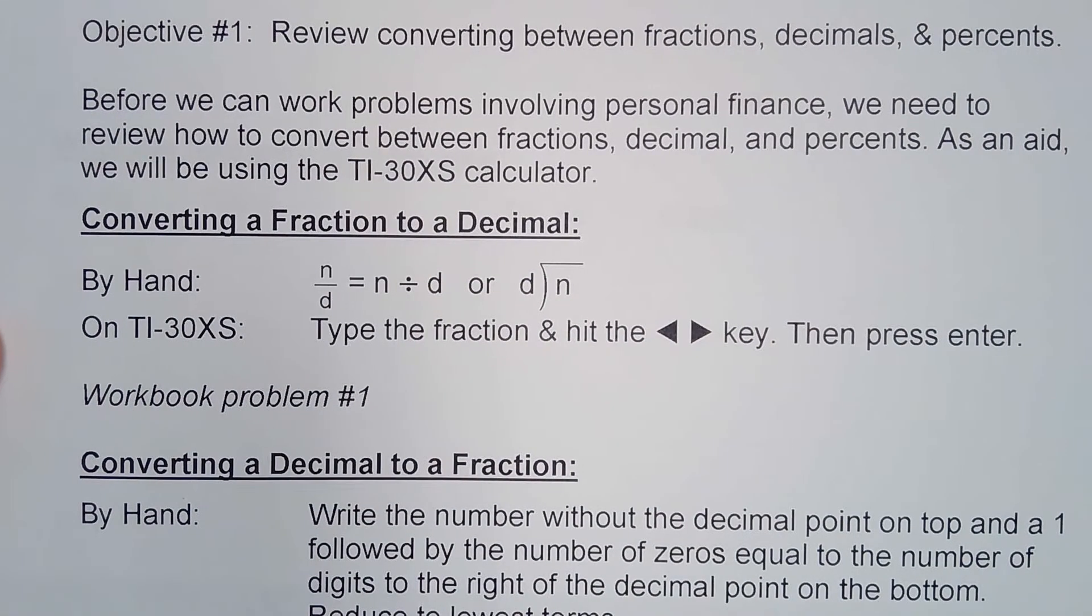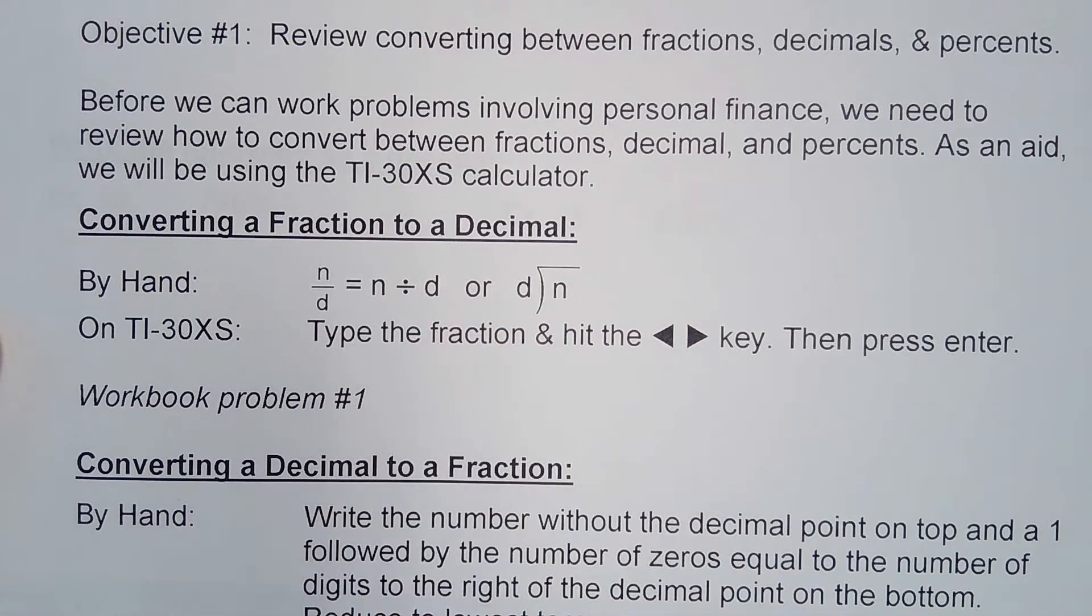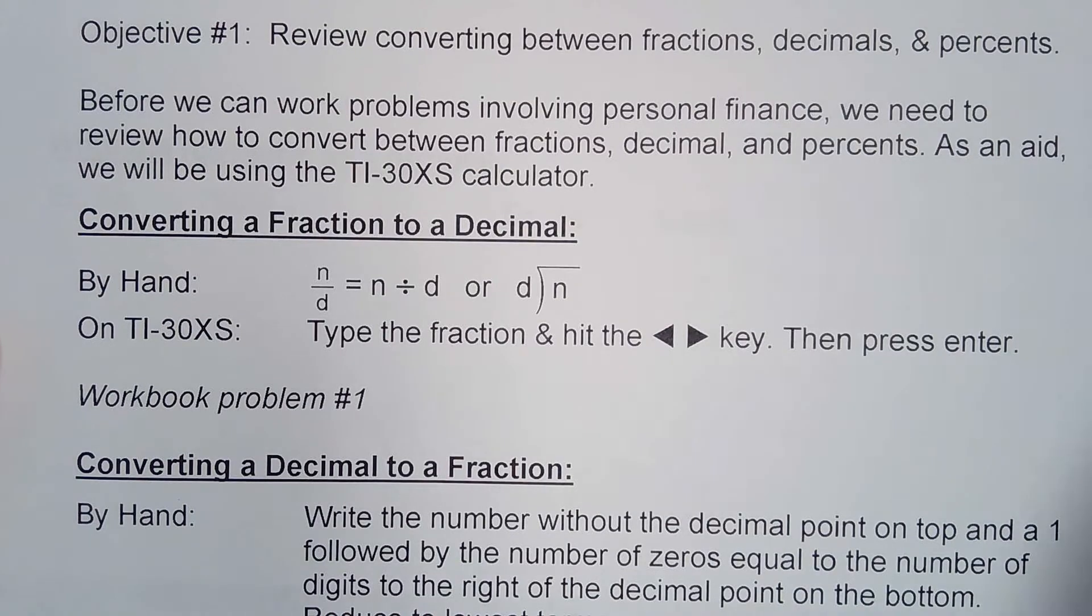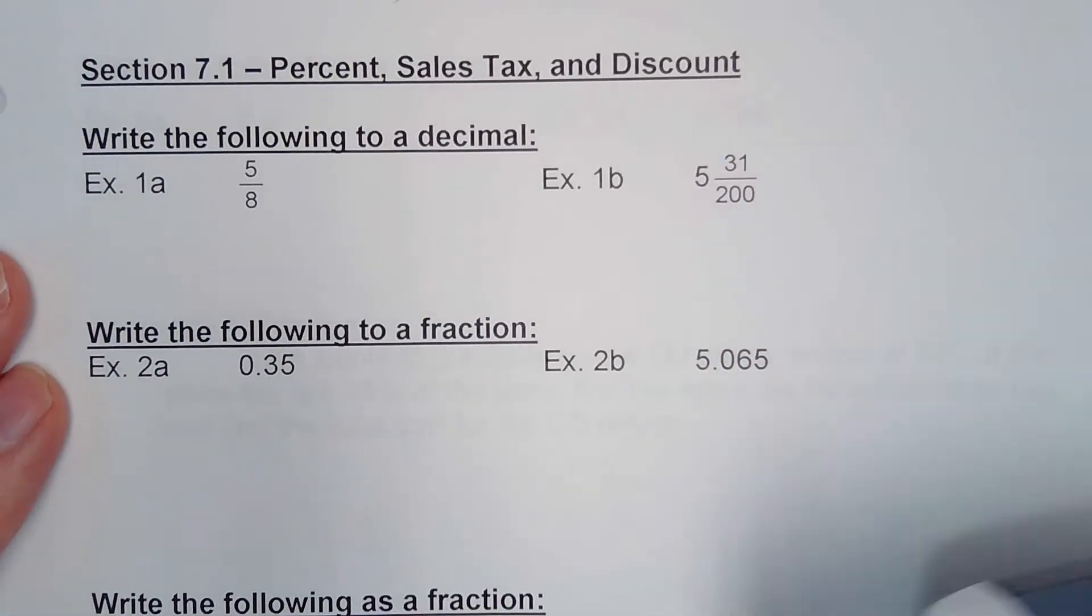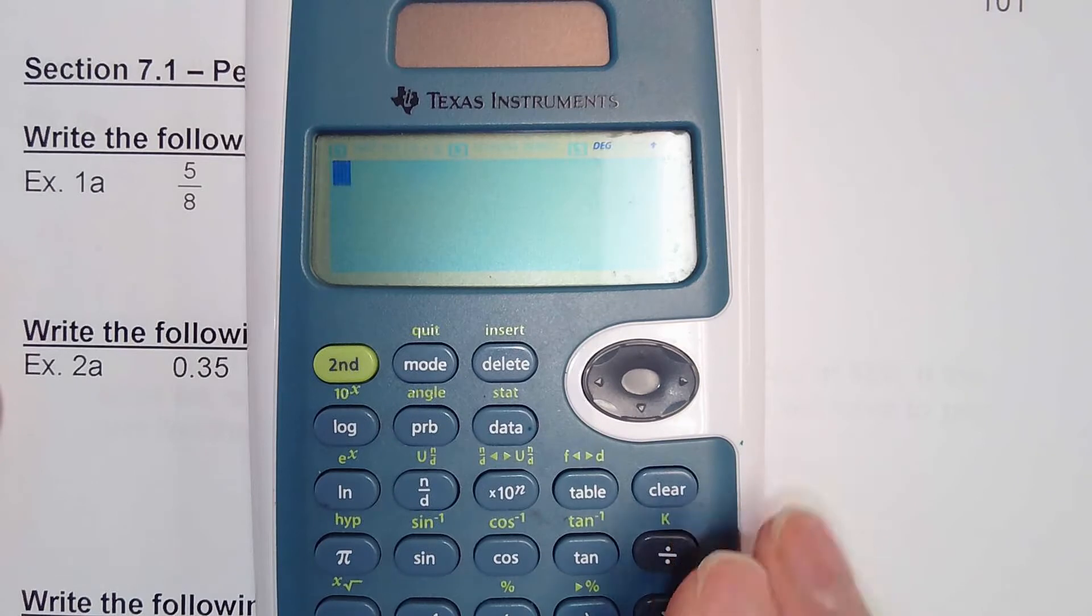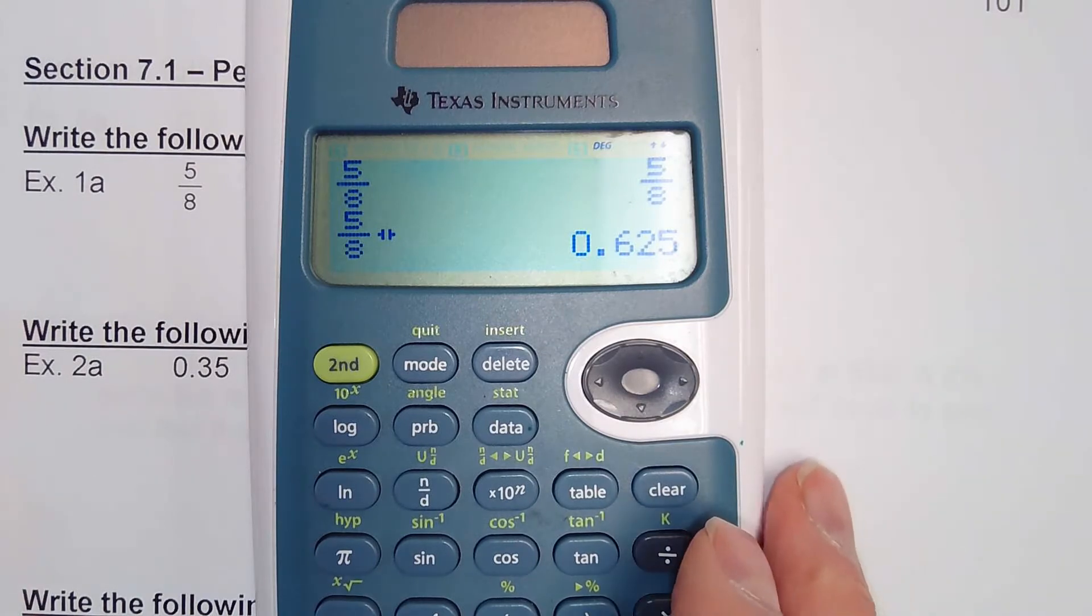Remember, by hand if I'm converting a fraction to a decimal, I need to divide—take the denominator and divide the numerator. On the TI-30XS, I'm just going to type the fraction and hit that double arrow key and then press enter. If I go to our workbook on page 101, let me clear the screen. My first fraction is 5/8, so I'm going to type that fraction. When I hit enter, it just gives me a fraction back. So next to the three key, I hit that double arrow key and there's my decimal, 0.625.